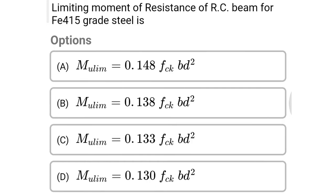Next question: limiting moment of resistance of RC beam for Fe 415 grade steel is option A Mu limit = 0.148 fck bd², option B Mu limit = 0.138 fck bd², option C Mu limit = 0.130 fck bd². The correct answer is option B: Mu limit = 0.138 fck bd².